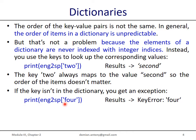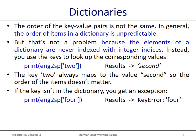We can also find the number of items present in the dictionary with the same function called len(). The len() function is polymorphic — it is used to get the length of a string, to get the number of elements in a list, and now we can use the same function to get the number of items in the dictionary. So len(eng_to_sp) will return the value 3, as we initialized the dictionary earlier with three items.